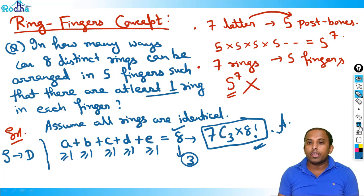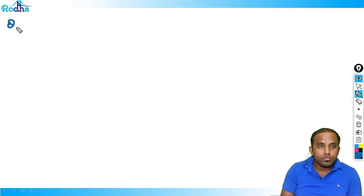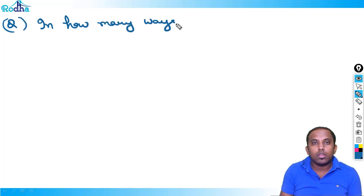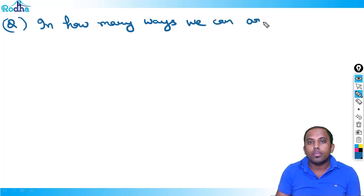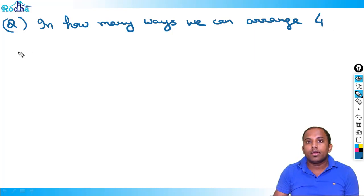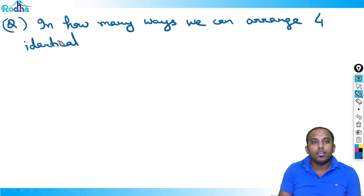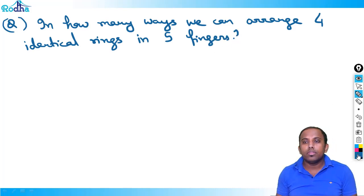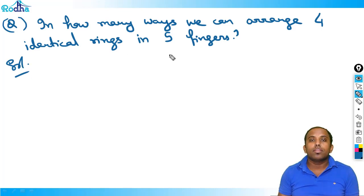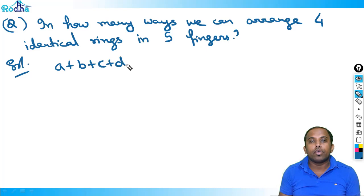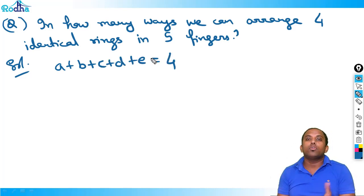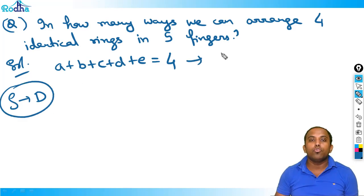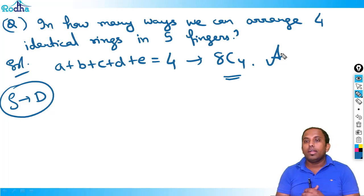Now, what if I change the question to identical rings? In how many ways can four identical rings be arranged in five fingers? Since the rings are identical, there's no issue — we don't have to arrange the rings because their position order doesn't matter. So it's simple S-to-D distribution: 4 + 4 signs gives 8C4. So 8C4 is the answer for this question.